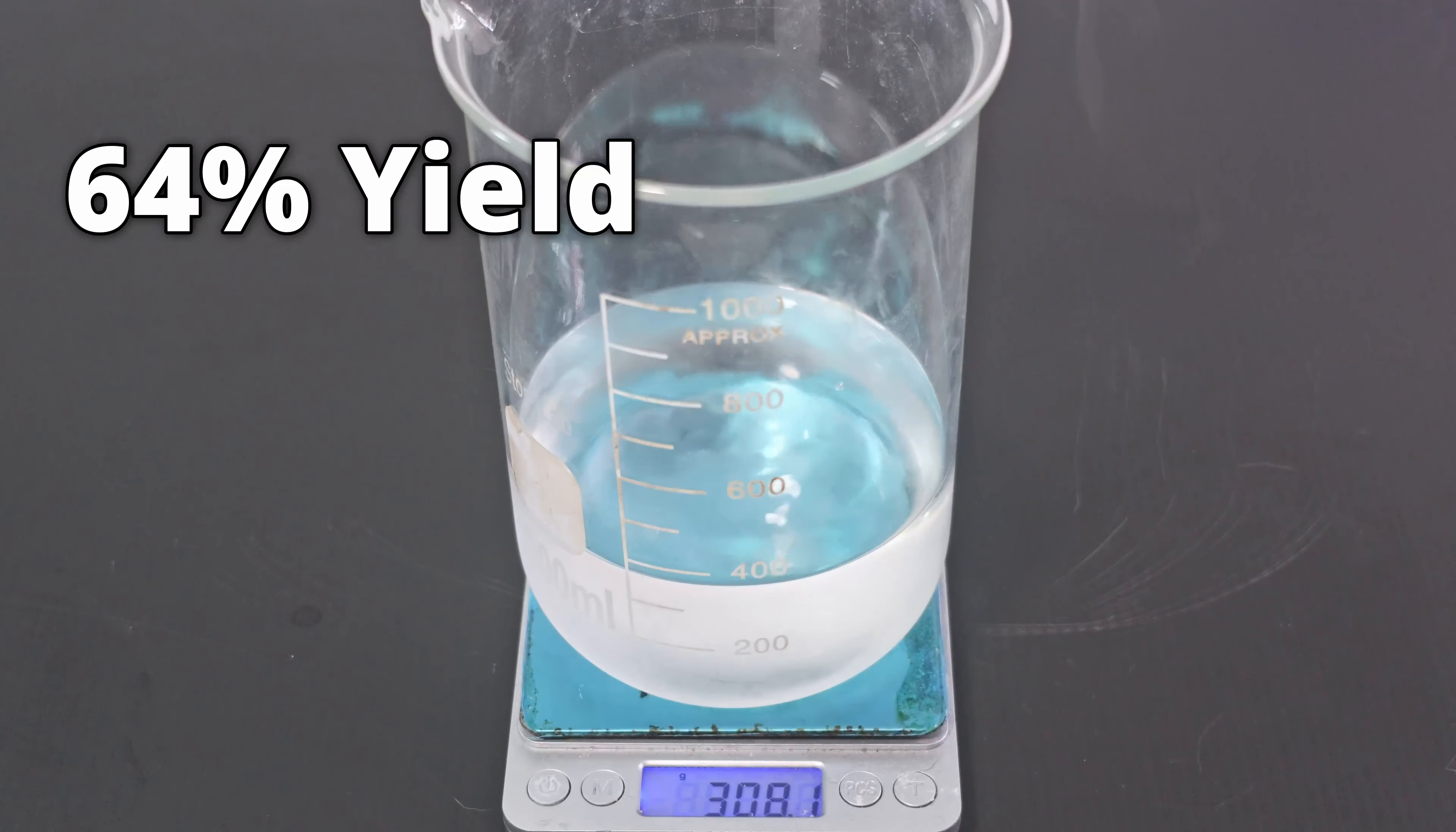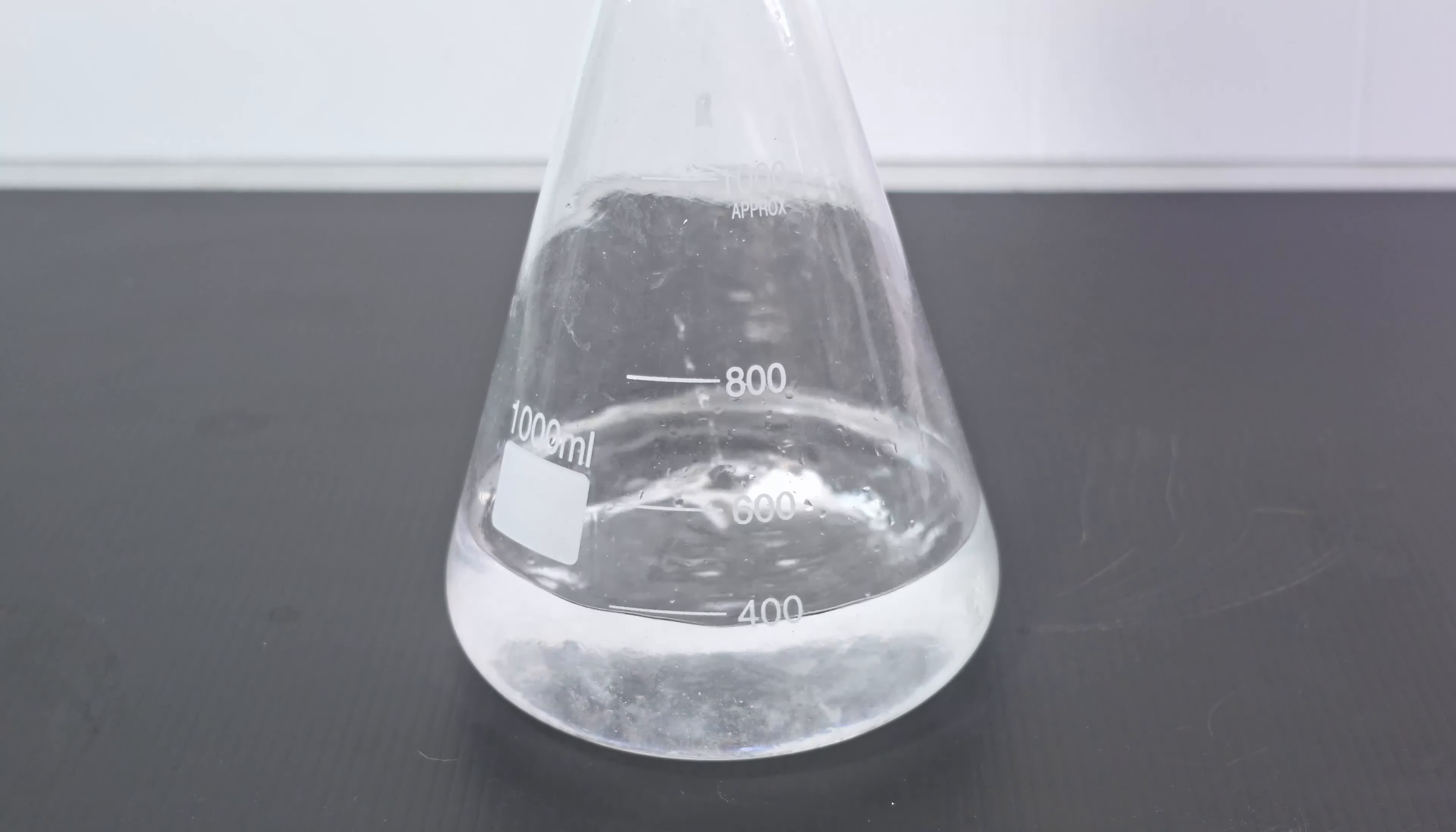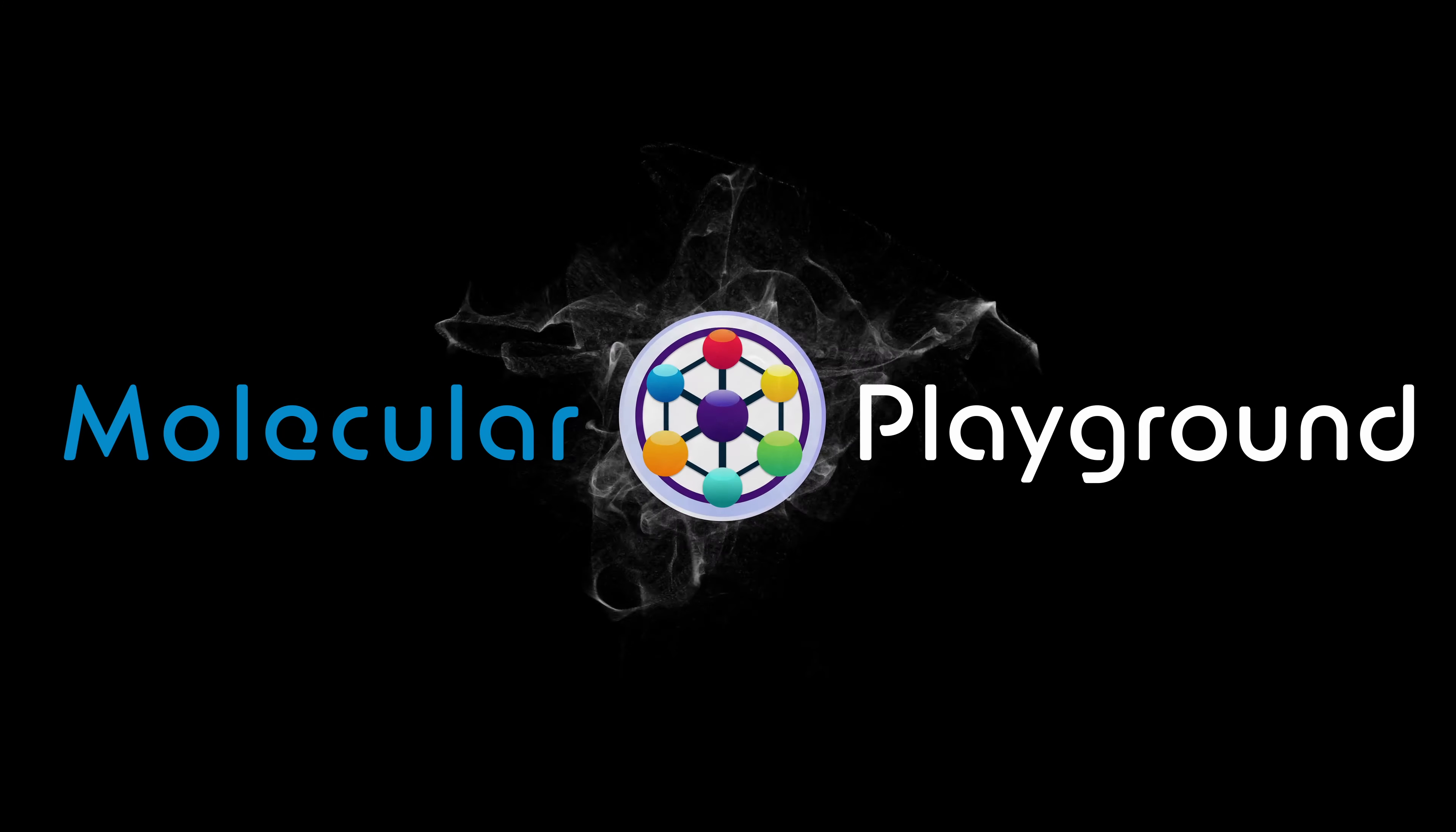This is much better than the yields of similar experimenters, which always seem to hover around 50%. This yield is also on par with many research papers online. I'm going to store my tert-butyl chloride in here for now until I get a more permanent container. Make sure to store it in a freezer to reduce volatility.